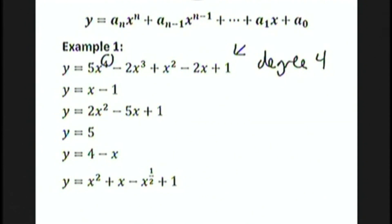y equals x minus 1. This is a degree 1 polynomial, or first degree polynomial. Note that x minus 1 could be written as x to the 1 minus 1, so this is a polynomial of the first degree.